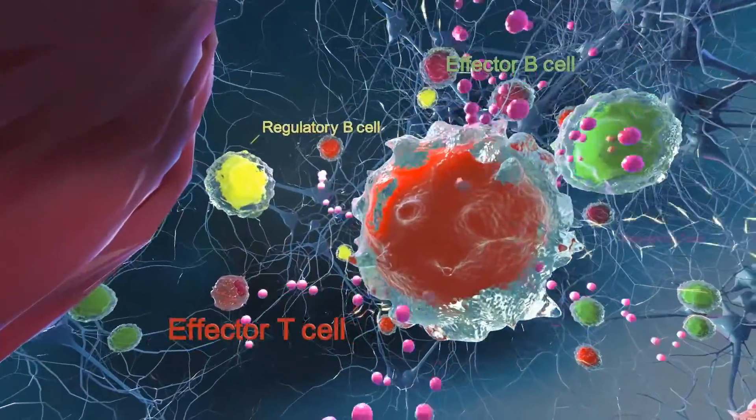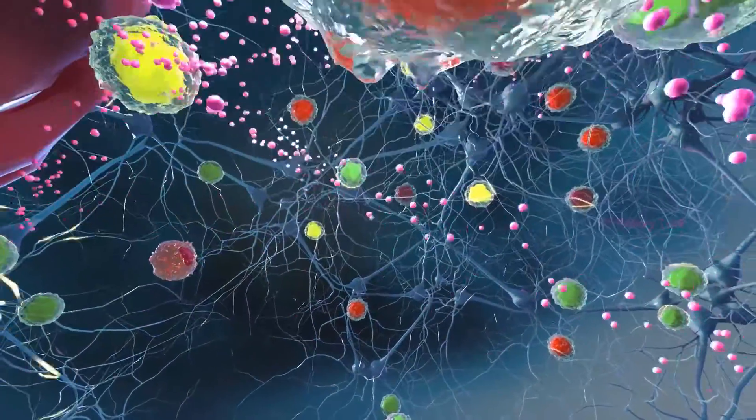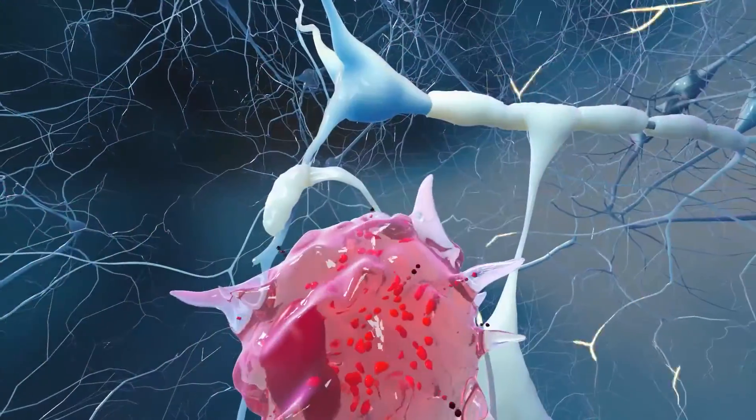Once they enter the CNS, these immune cells can damage the myelin sheath, which normally insulates healthy nerves.